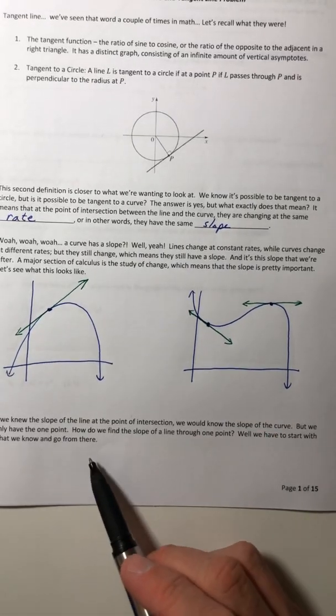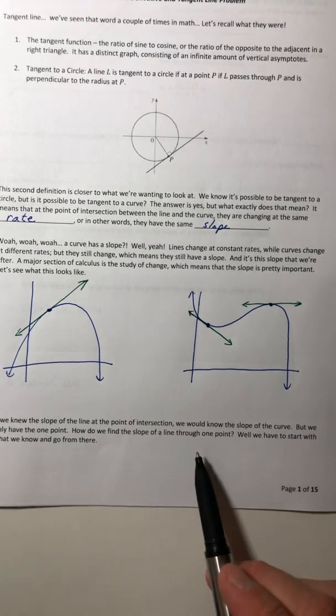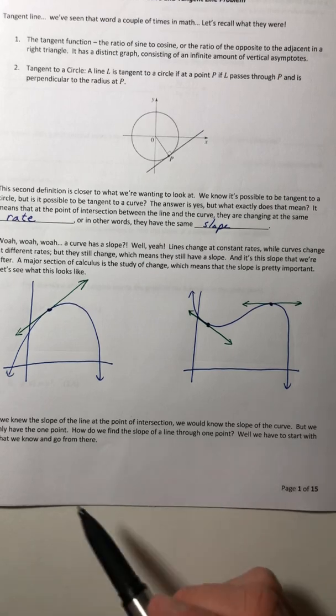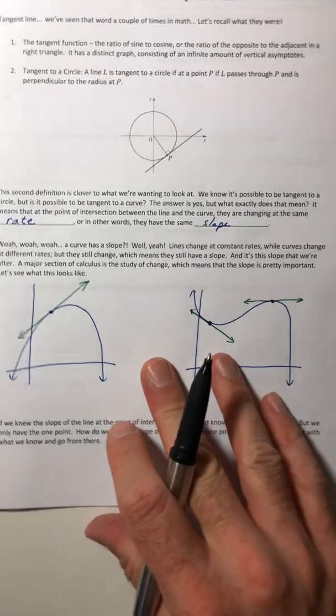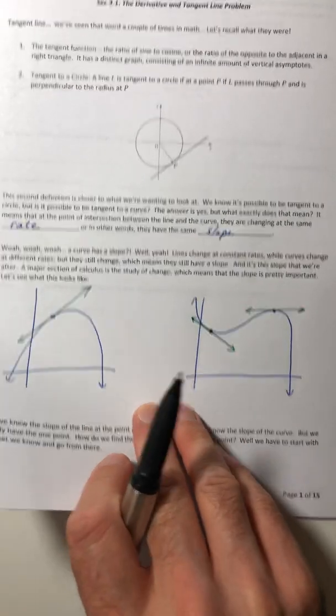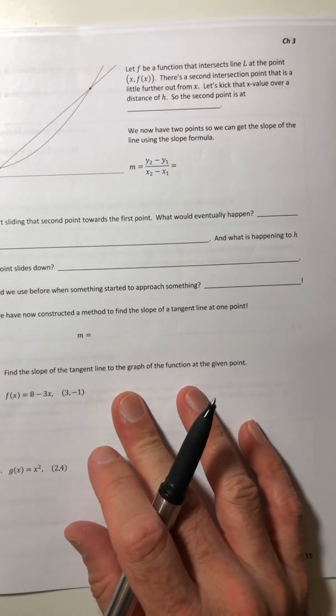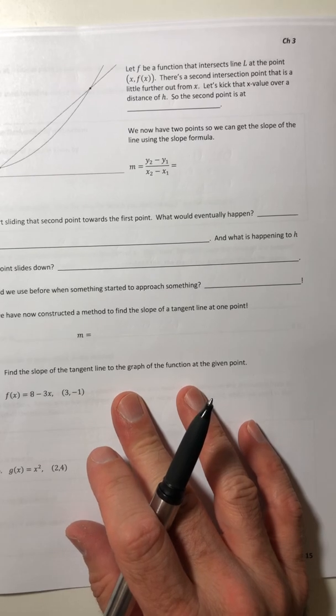But we only have one point. So, how do you find the slope of a line through one point? Well, you have to start with what you know and go from there. Normally, like if you want the slope of a line to calculate it, you would need two points. So, we're going to start with just that.